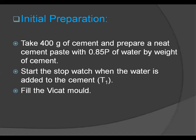For initial preparation, a consistency test must be done before starting the procedure to find out the water required to give the paste normal consistency, that is P. Take 400 grams of cement and prepare a cement paste with 0.85P of water by weight of cement. The gauge time is kept between 3 to 5 minutes. Start the stopwatch at the instant when water is added to the cement and record this time as T1.